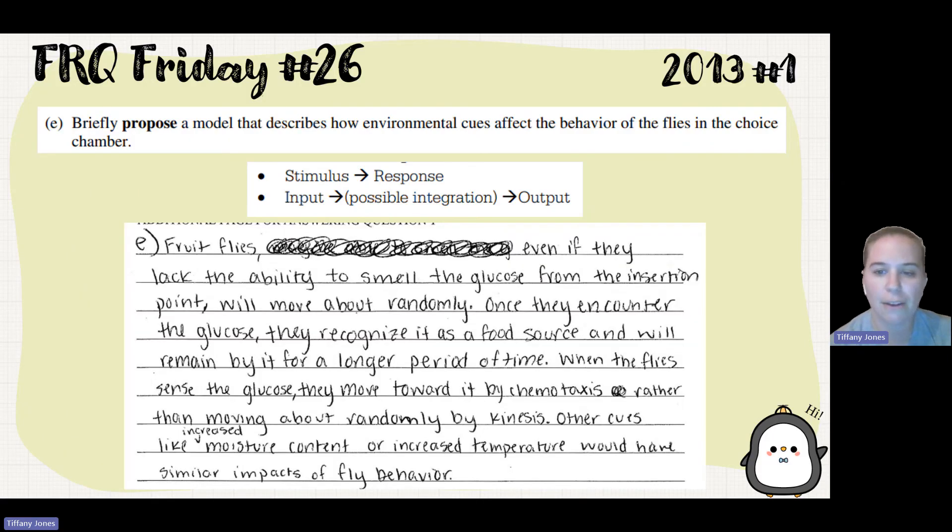So a student said, the fruit flies, if they lack the ability to smell the glucose from the insertion point, they will move about randomly. Once they encounter the glucose, they will recognize it as a food source and will remain by it for a longer period of time. When the flies sense the glucose, they move towards it by chemotaxis, rather than moving about randomly by kinesis.